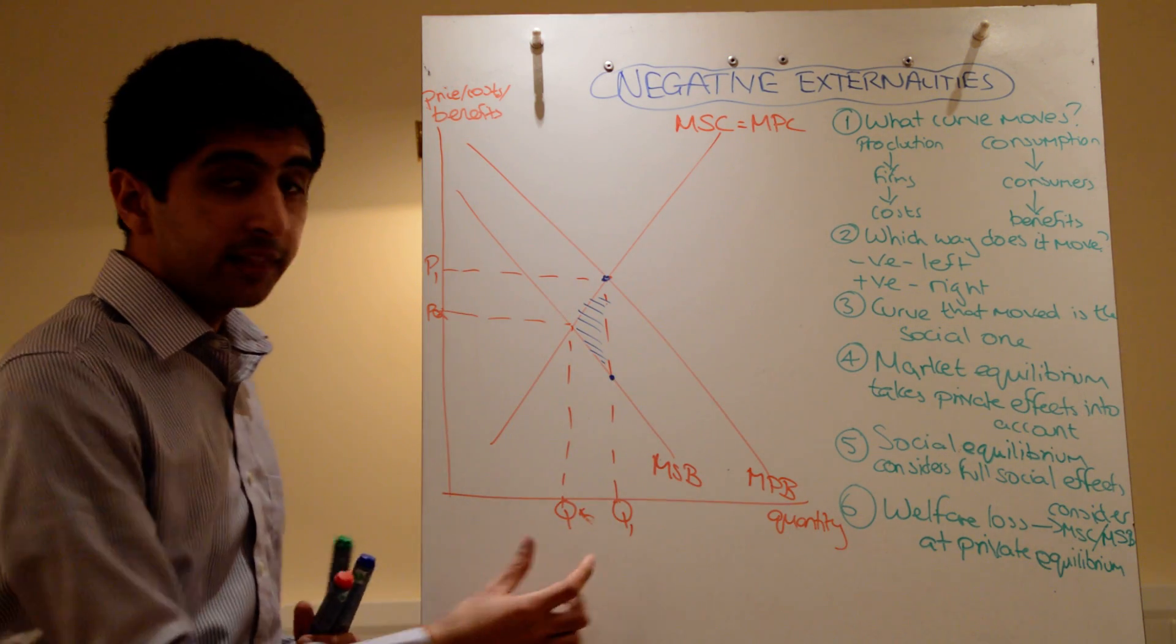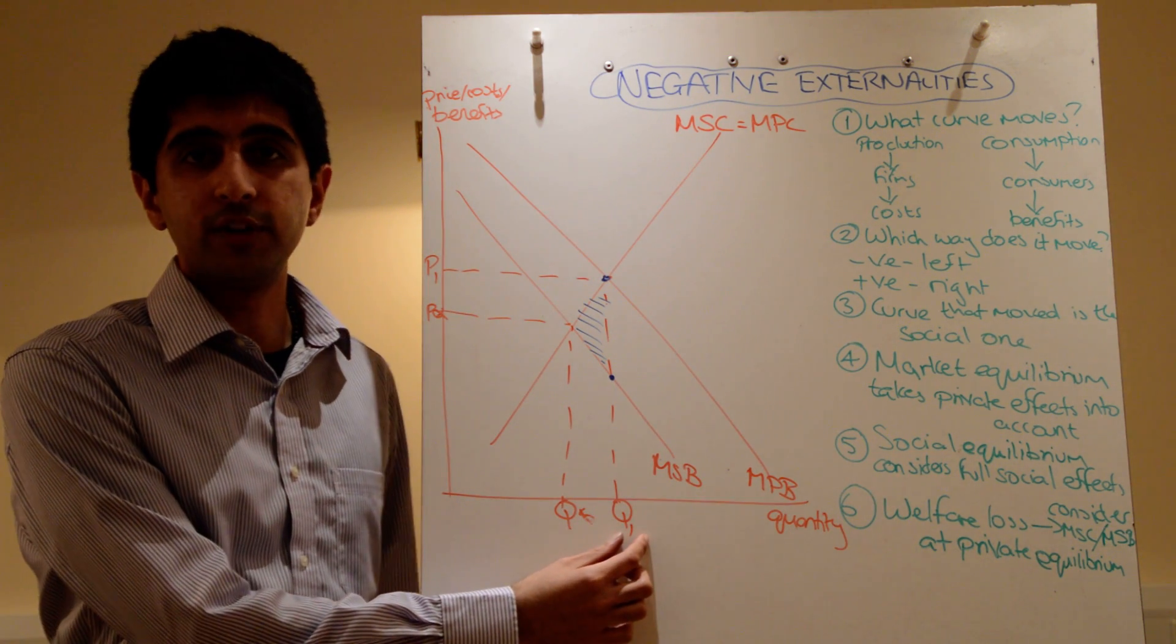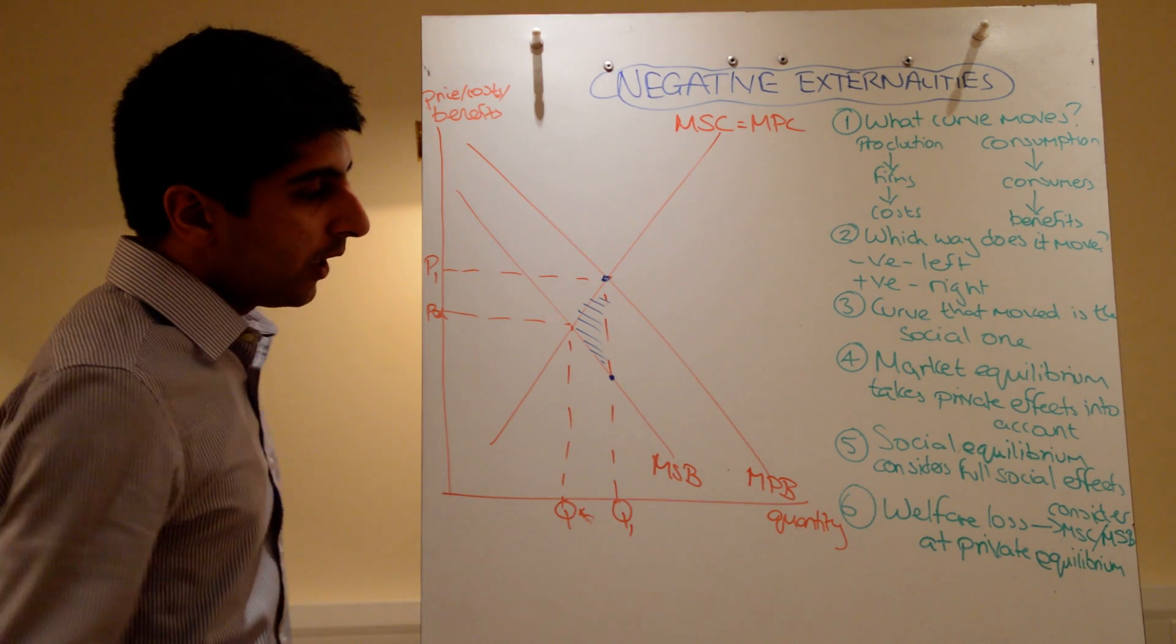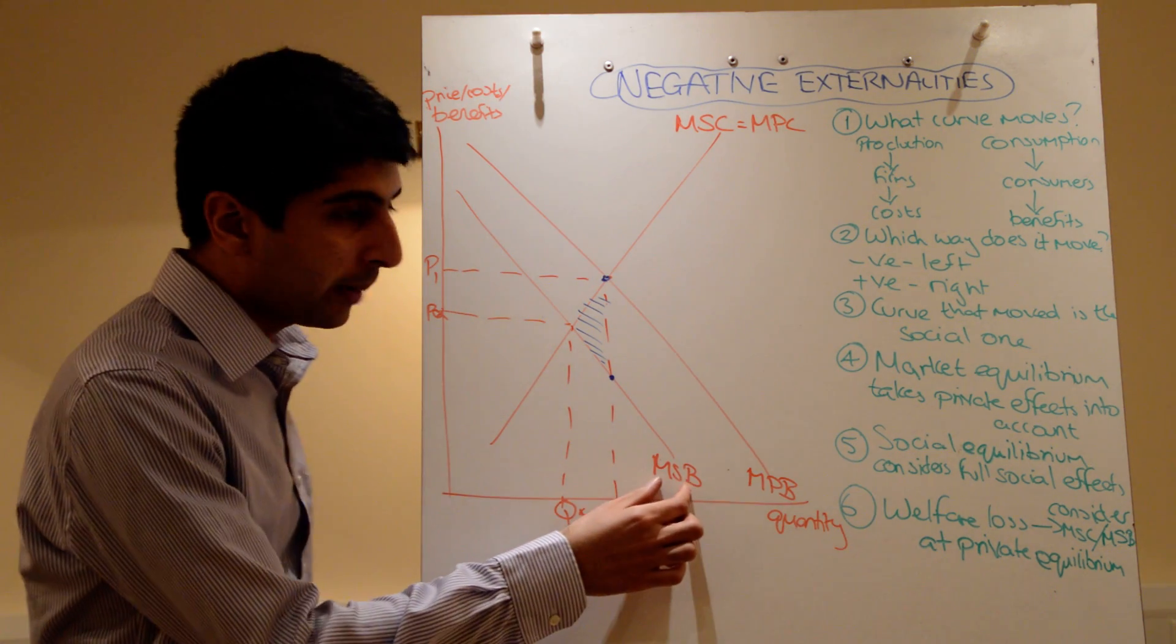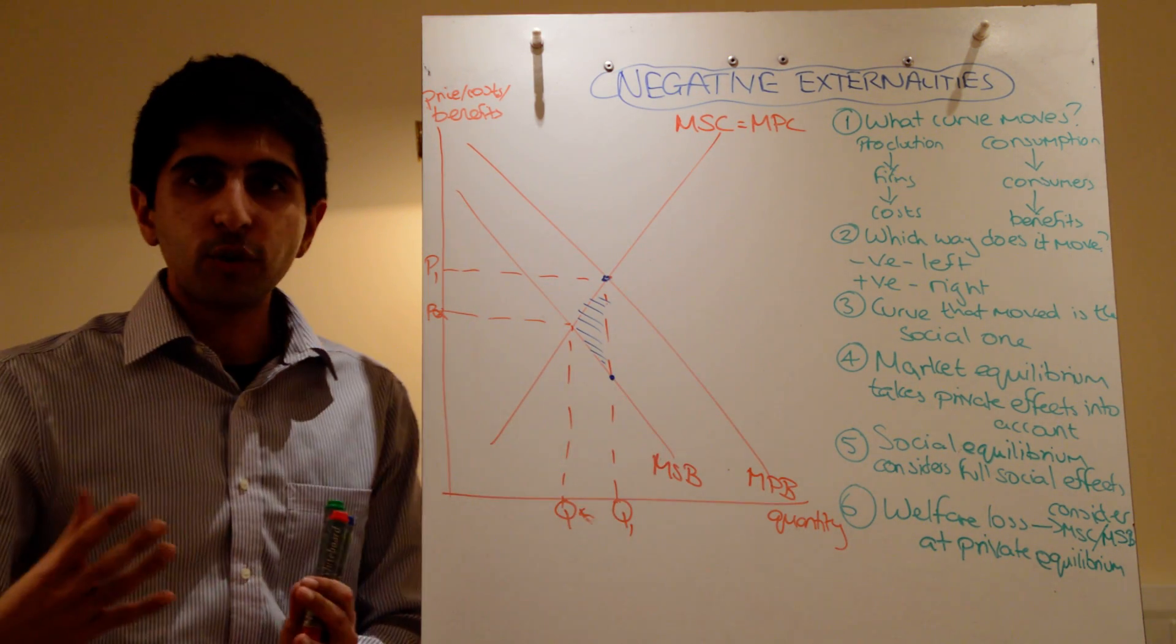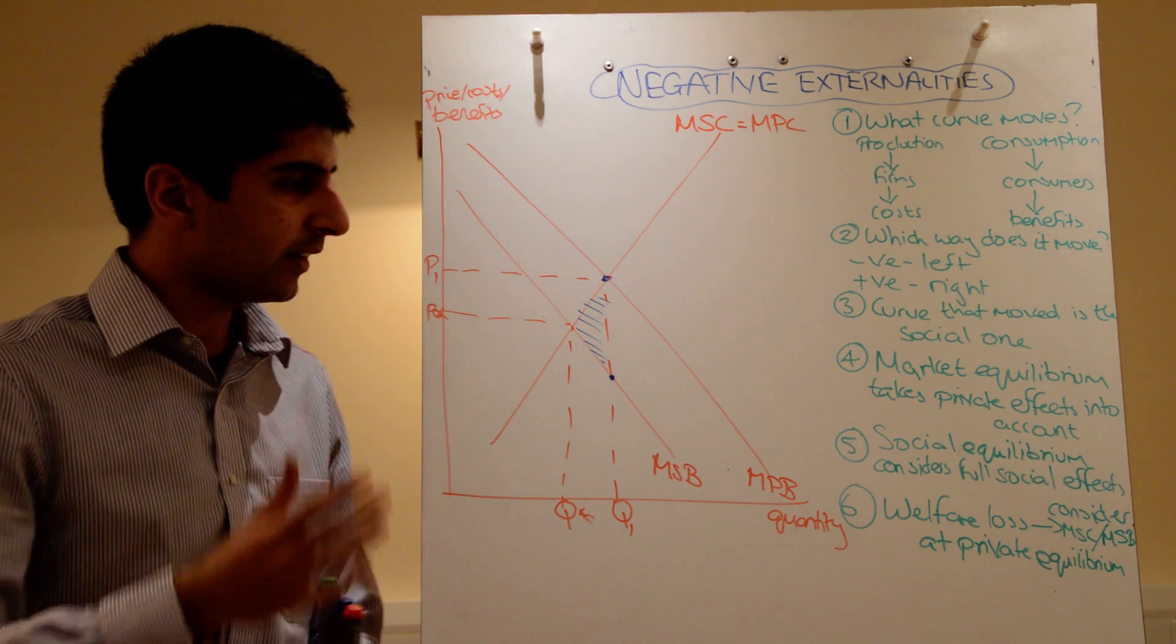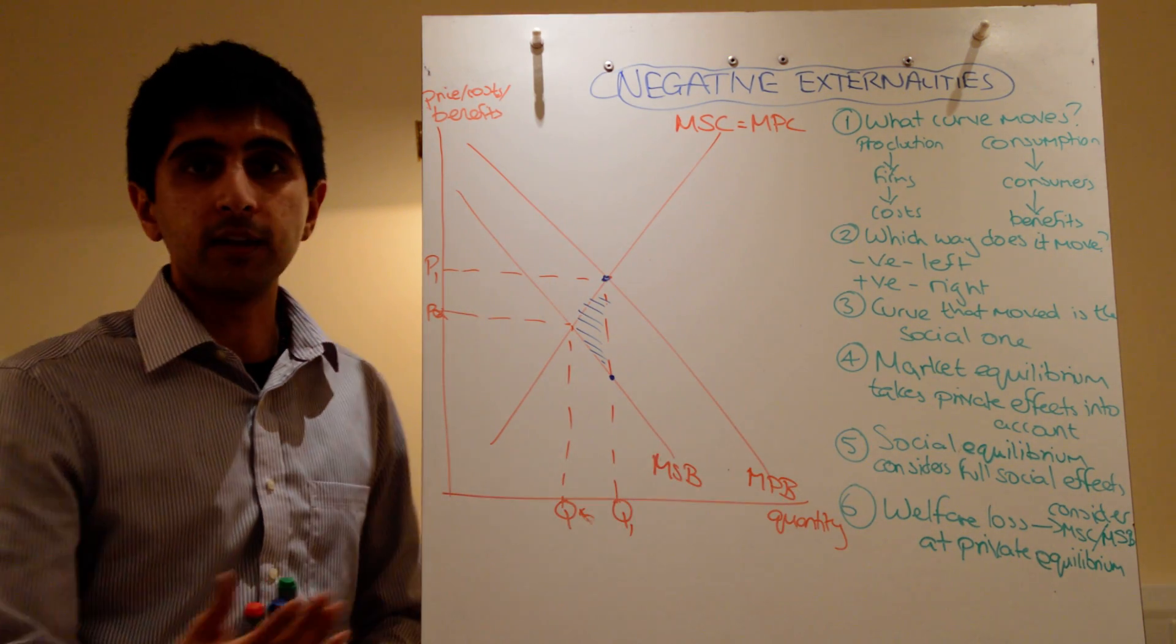So this diagram tells you there is a misallocation of resources. Q star is what society would like produced, but Q1 is what's actually produced in the market. There's an overproduction here. That there is the market failure. An overproduction, a misallocation of resources. And that happens because individuals don't account for the negative externalities. The social benefits curve takes into account these negative externalities in consumption. So in truth, the social benefit is less than what the private benefits are. But the private consumer doesn't take them into account. He only cares about his own self-interest. He doesn't care about how the rest of society feels.